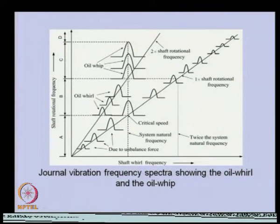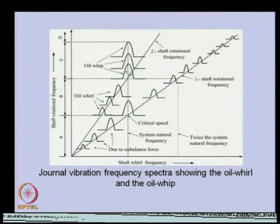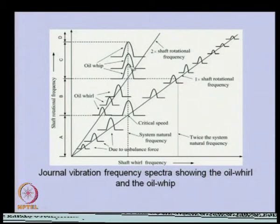Oil whip is a very special condition of oil whirl itself. At oil whip, the rotor is rotating at around twice the critical speed, and because of that the frequency of whirl equals the natural frequency of the system — this is the more dangerous instability condition. This phenomenon of oil whirl and oil whip is basically nonlinear in nature, and can only be analyzed through nonlinear analysis via the Reynolds equation. In subsequent slides I will show how we can get these amplitudes with the help of pressure variations in the fluid film bearing.